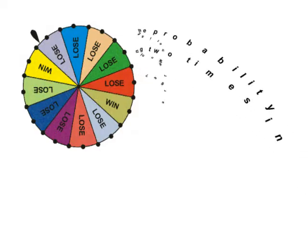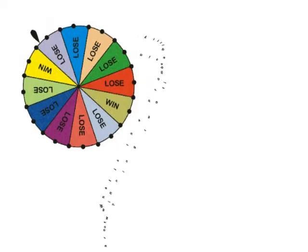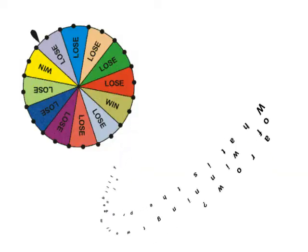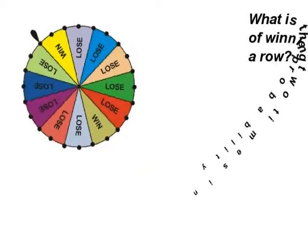When trying to find the probability of more than one event occurring, simply find the probability of each event occurring and then multiply the probabilities together.